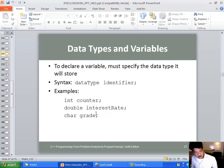Again, identifiers are variables. Double space interest rate. This is all in a semicolon. That's the syntax.